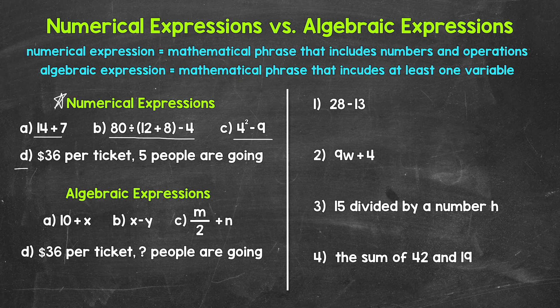And then we have example D right here. So we have $36 per ticket to some type of event, and then a group of 5 people are going. We can represent this situation mathematically with an expression, a numerical expression. We have $36 per ticket, and we are multiplying that by 5, so 36 times 5. And again, we are representing that situation mathematically with a numerical expression. Let's move on to algebraic expressions.